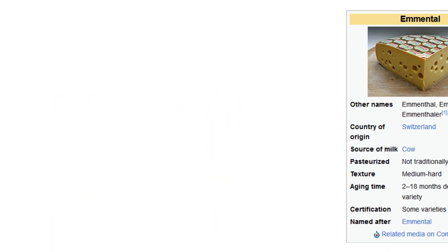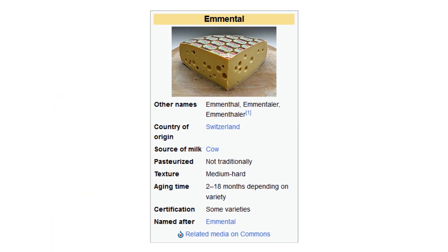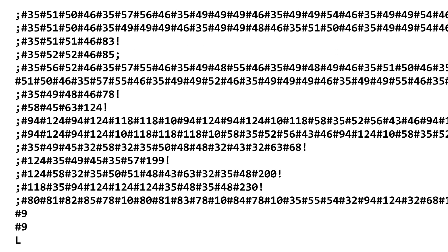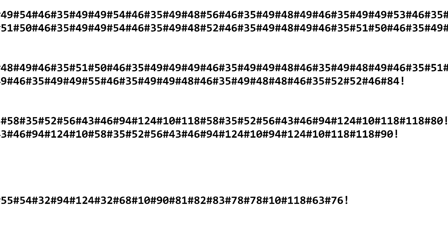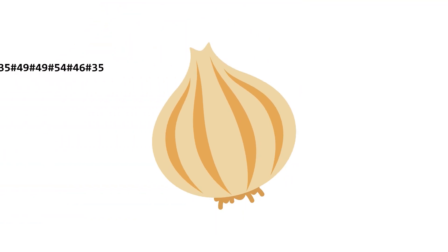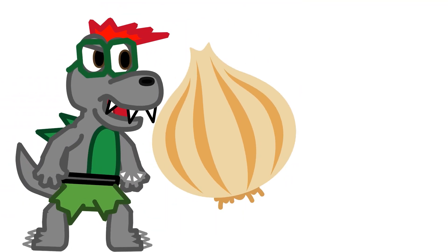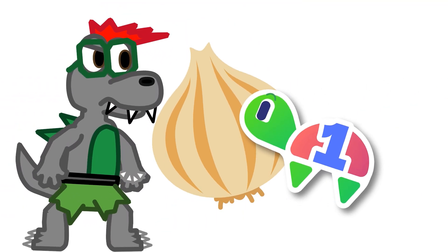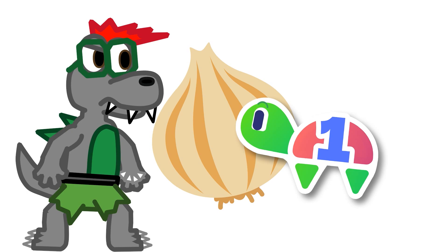Hey guys. Emmental is a type of Swiss cheese. But honestly, after using the Emmental programming language, I would say it would be better described as an onion. Because it has layers? Sure. Also, it makes me want to cry.